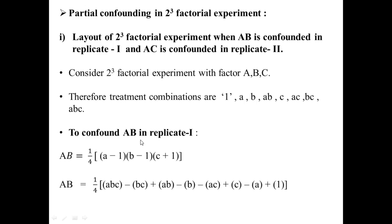We confound the AB interaction effect in replicate 1. When we confound any effect, we first divide that replicate into two blocks, then assign positive and negative treatment combinations into each block. The formula for interaction effect AB is (1/4)(A−1)(B−1)(C+1), which expands to (1/4)[ABC − BC + AB − B − AC + C − A + 1]. So the positive treatment combinations are ABC, AB, C, and 1, while the negative treatment combinations are BC, B, AC, and A.